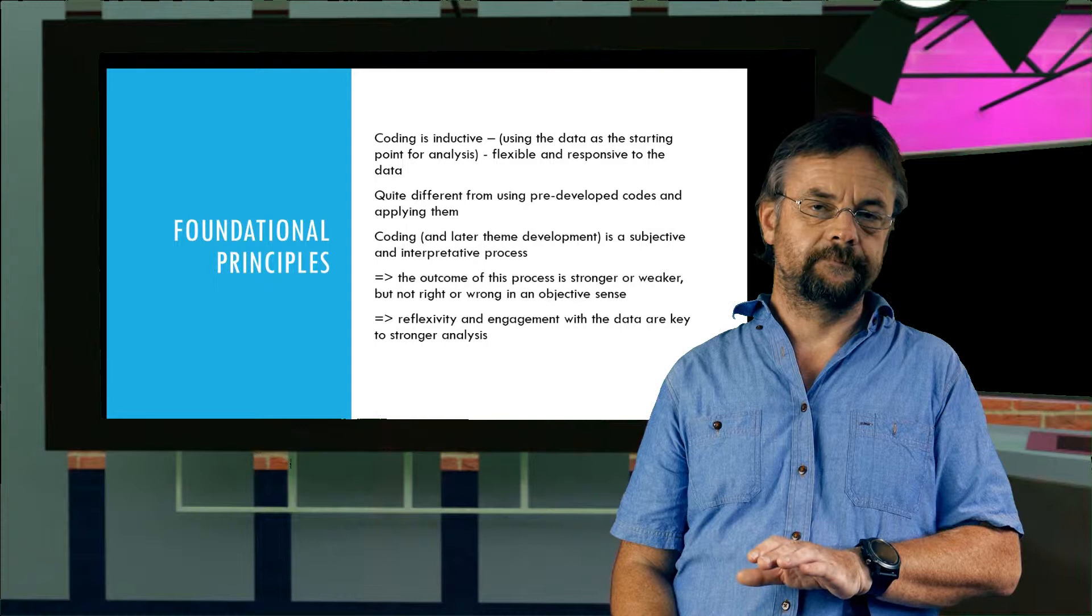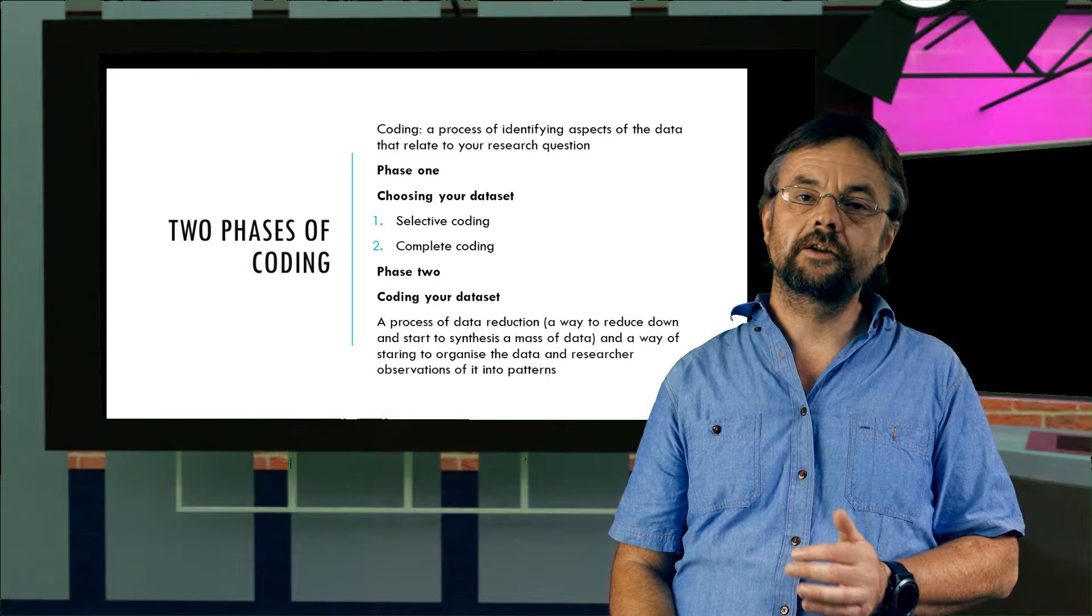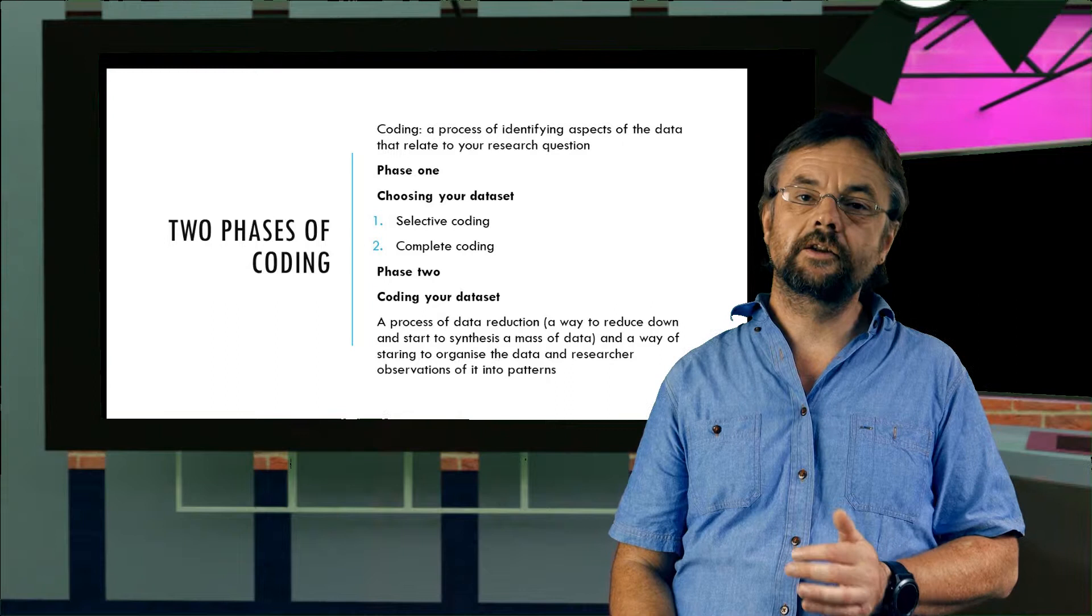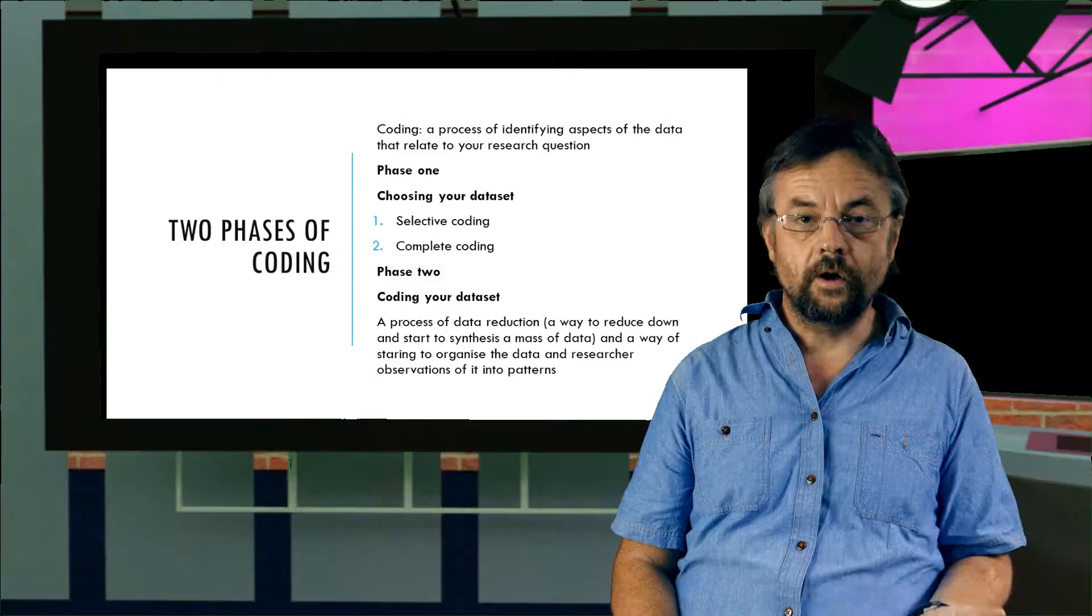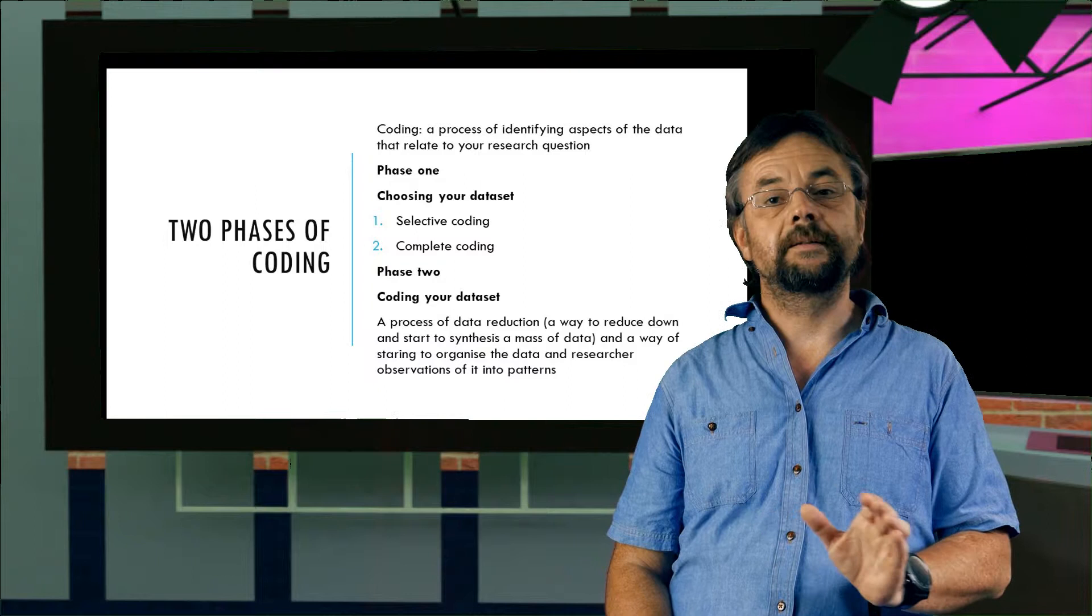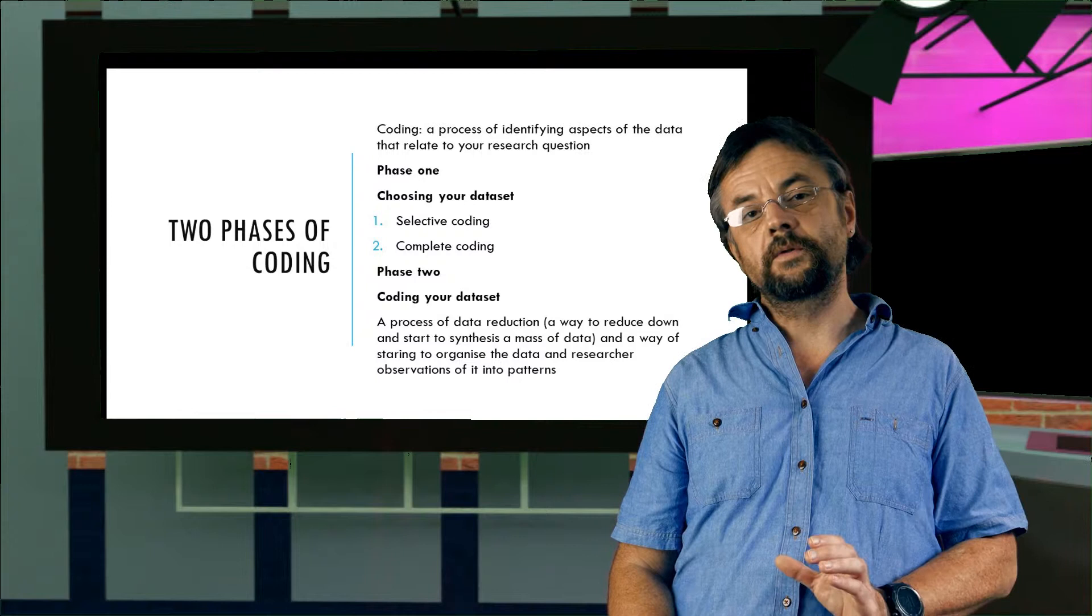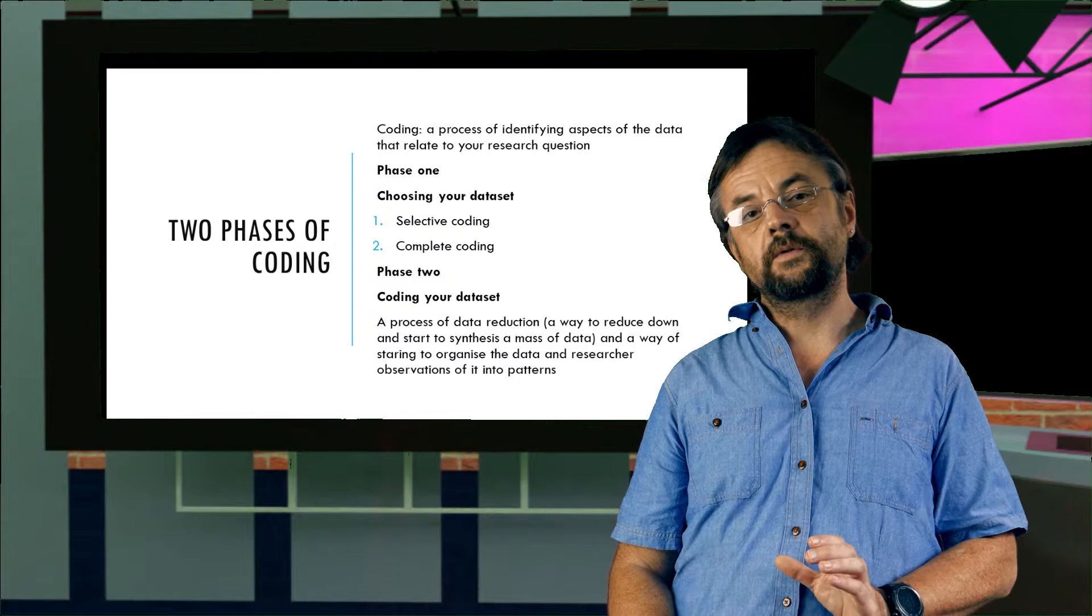Now, coding is the process of identifying aspects of the data that relate to your research question. There are two phases of coding in thematic analysis. First, you decide what part of your data you're going to code. You could code the whole lot, or you could code a particular part, say, from one particular participant, or when participants talk about one particular topic. Now, you usually do this when your data set is very large. There's too much data to process or analyze all at once.